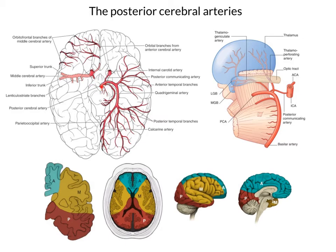What the posterior cerebral arteries do is they loop around the midbrain and then run along the inferior surface of the posterior hemisphere, supplying the occipital lobe and also the inferior aspect of the temporal lobe.